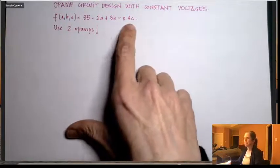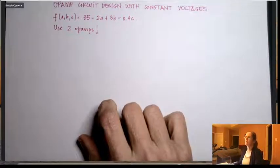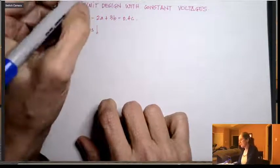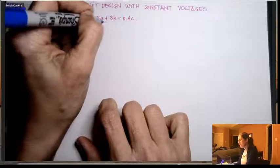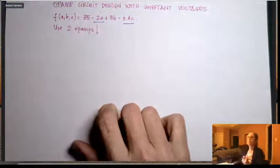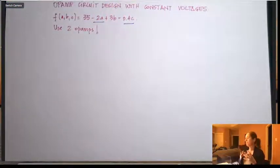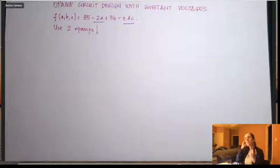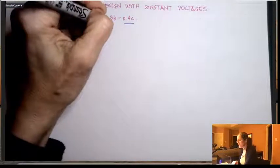But when you have a function like this with three variables, the ones that have a minus in front, the minus 2a and minus 0.4c are ready to go into a summing amplifier, because if I multiply a by 2, summing amplifier, it's gonna be minus 2, it's gonna invert it. The only one that I need to prepare beforehand is the 3b.